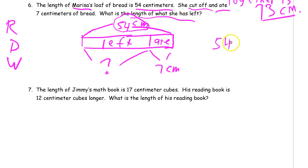54 minus seven equals—there's our number sentence. Okay, 54 minus seven, so how do we figure this out?